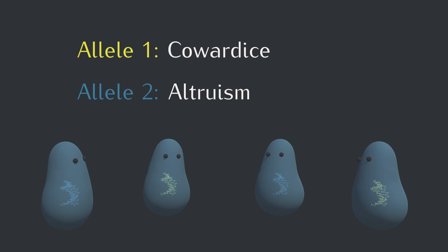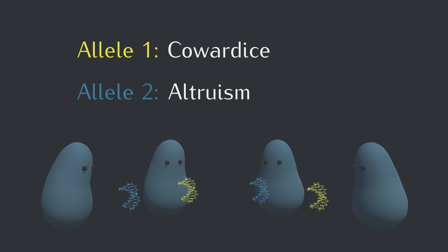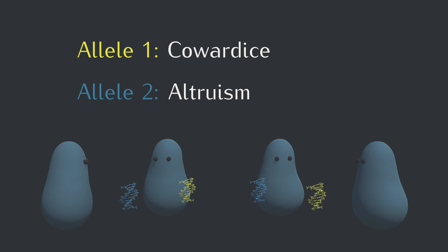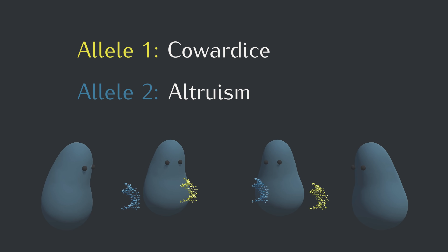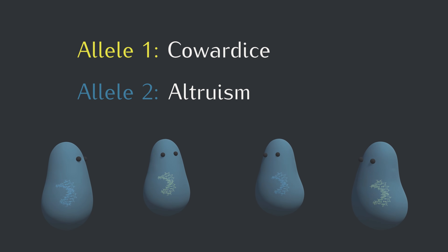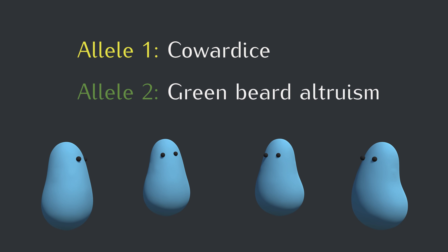One way could be to let the altruism alleles see each other so they know who to help. But because DNA stays inside the blobs and doesn't have eyes, we need some detectable feature to go with the altruism. The classic example of this is a green beard — and that's a fun thing to put on the blob, so let's stick with that.